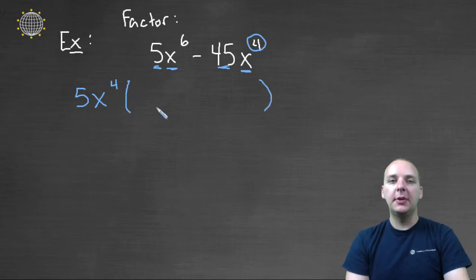And then I have to ask myself, what times five x to the fourth would give me five x to the sixth? The answer is x squared.